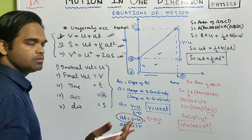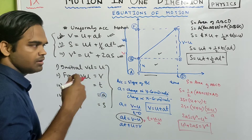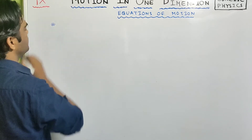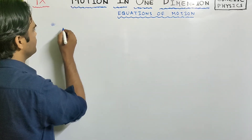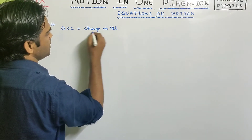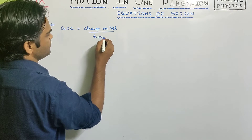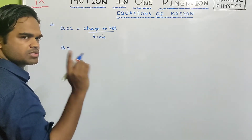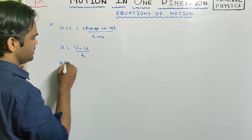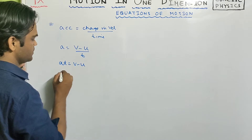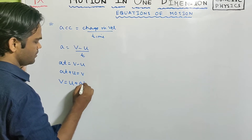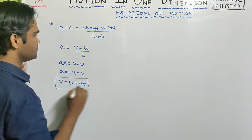There is an alternative method for derivation. By definition, acceleration equals change in velocity divided by time, so a equals (v minus u) divided by t. This gives at equals v minus u, and therefore v equals u plus at — the first equation of motion, derived just from the definition of acceleration.